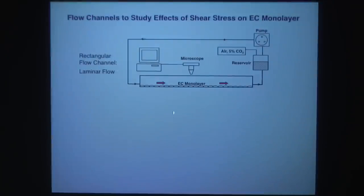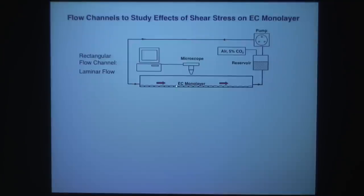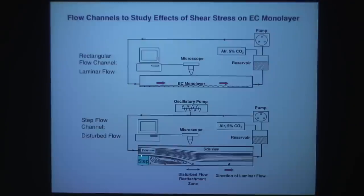To study this, we use a flow chamber in which endothelial cells are cultured as a monolayer. Flow is from left to right due to hydrostatic pressure difference, which can be observed under a microscope. This gives laminar shear flow. We can also use oscillating shear flow back and forth, producing flow without a net direction. We can also simulate disturbed flow seen at branch points by placing a step at the beginning of the chamber — the flow undergoes recirculation forming eddies in the reattachment zone, just like branch points.